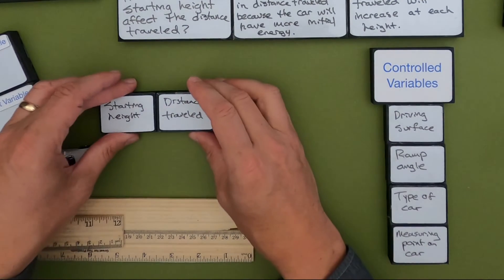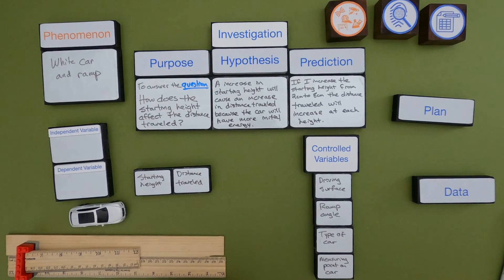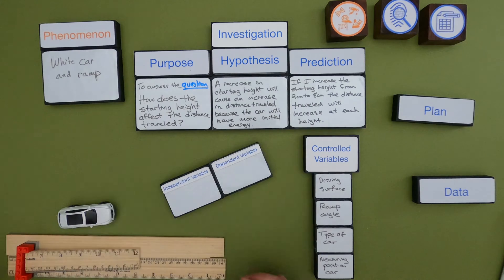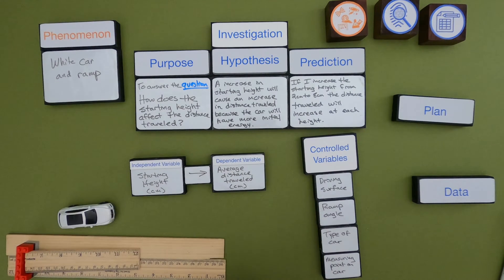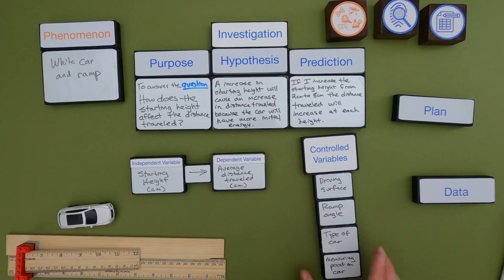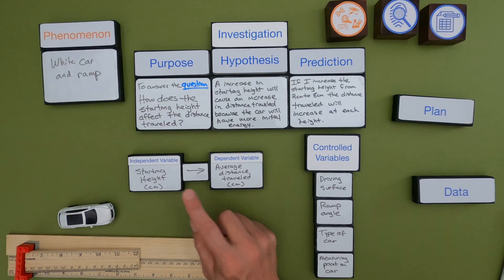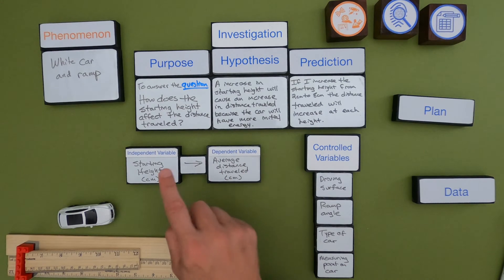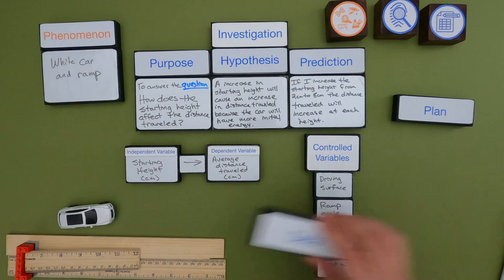Once I've done that, it makes it easy to start thinking about what my independent and dependent variable is — it's just what I change and what I'm actually going to measure. The starting height is going to be my independent variable, and my dependent variable is going to be the average distance traveled. You always want to do multiple trials and average them. The independent variable is what I'm changing, and that causes a change in the dependent variable. The dependent variable is not dependent on all the other things because we're going to keep those controlled.